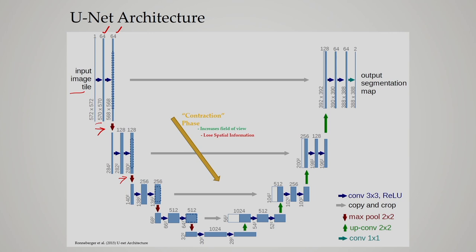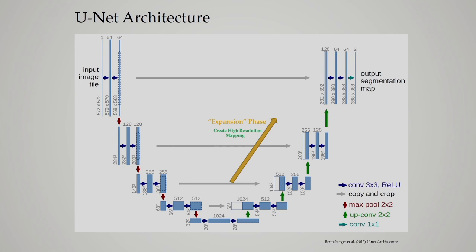We keep doing the convolution operation and max pooling, with the ReLU activation function. During the contraction phase we are reducing spatial information but increasing feature information — extracting features from the input image. All the important features are extracted in this phase. After the contraction phase, the next phase is the expansion phase, which is for creating the high-resolution mapping.